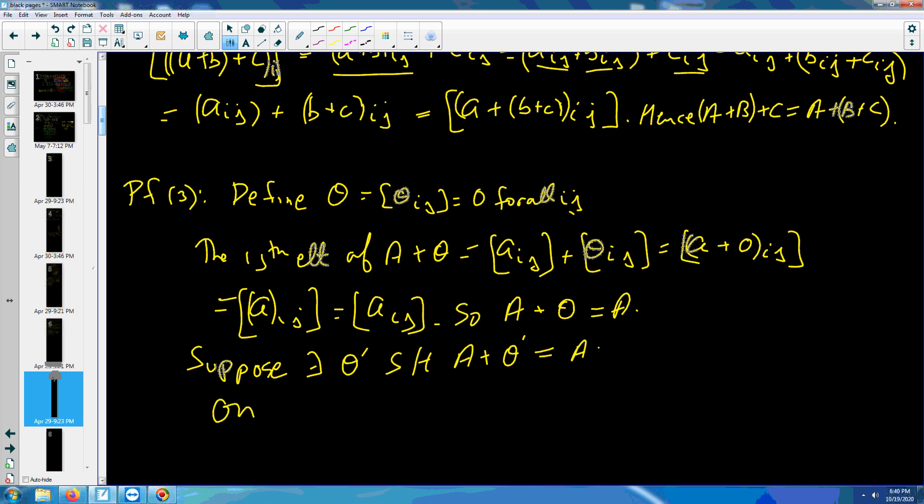On one hand, O plus O prime, thinking of this as the zero, it equals to O prime. And O plus O prime, thinking of this as the zero, it equals to O. Well, I added the same two matrices, and I got my answers. So, they must be equal.